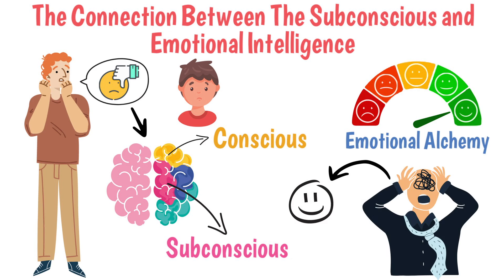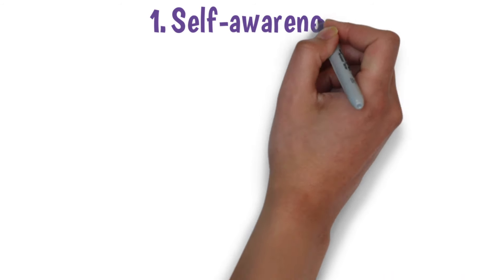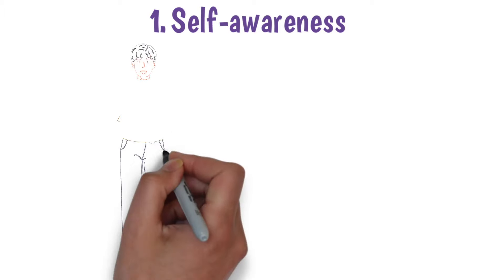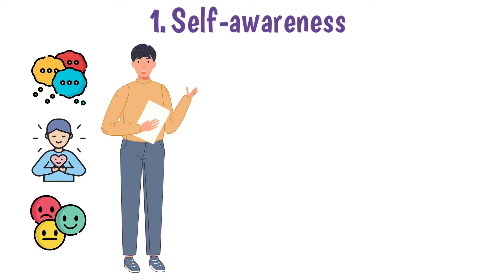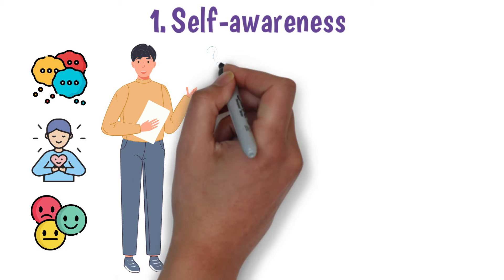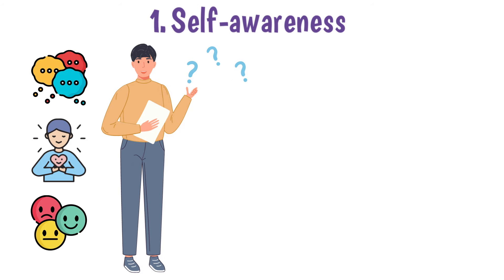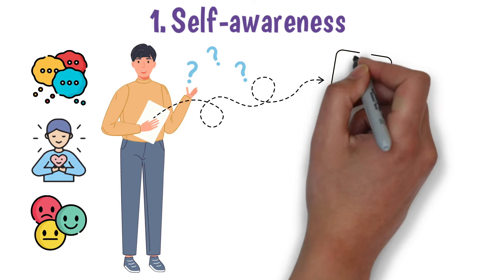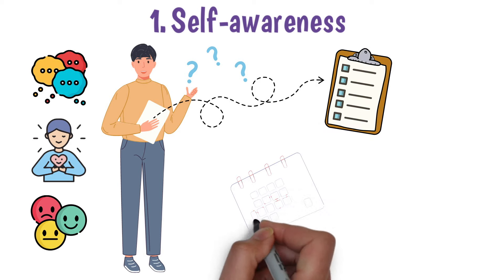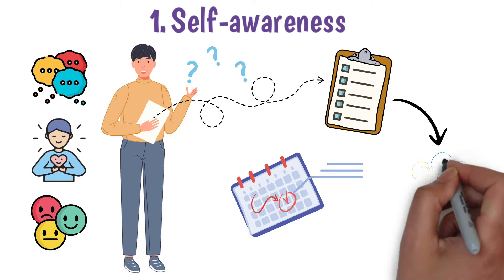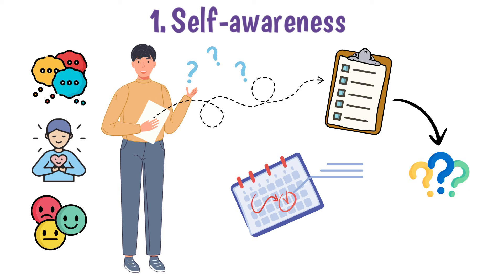We can grow our emotional intelligence in a few steps. Self-awareness: the first step to emotional intelligence is becoming self-aware. This involves recognizing our own thoughts, feelings, and behaviors without any judgment. Through self-reflection and introspection, we can understand why we feel a certain way and how it affects our actions. Start practicing self-awareness by writing down some of your thoughts and feelings throughout the day for a whole week, and after that, reflect on it. Can you find some patterns in your subconscious thinking?